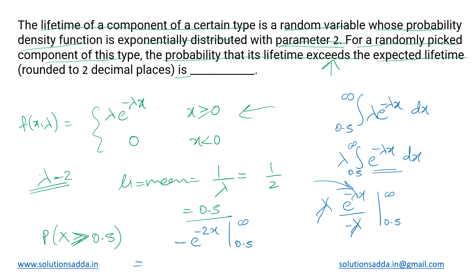Taking the minus outside: substituting infinity gives e raised to minus infinity, minus substituting 0.5 gives e raised to minus 1, since 2 times 0.5 equals 1. We know that e raised to minus infinity tends to 0, so that term is cancelled out, and we are left with minus of 0 minus e raised to minus 1.